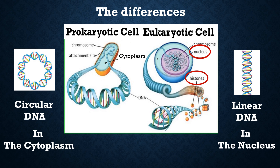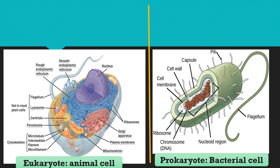In this figure we have an example of a eukaryotic cell — the animal cell — and an example of a prokaryotic cell — the bacterial cell. We can see the main similarities between these two kinds of cells: the cell membrane, ribosomes, cell wall, chromosomes, and flagellum.